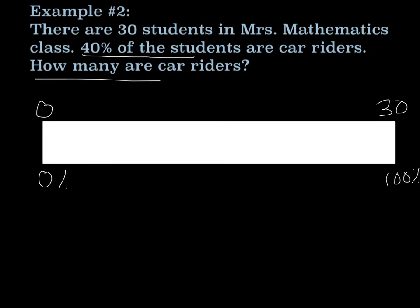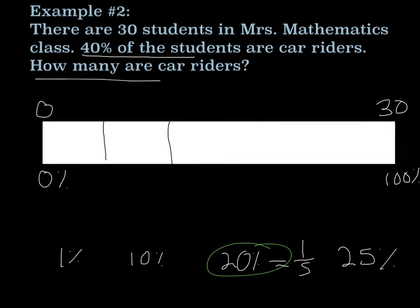So once again, we need to go back to those benchmarks: we have 1%, 10%, 20%, and 25% as our benchmarks. In this case, I would use the 20% because 20% plus 20% would give me the 40%. So if I remember, 20% is the same as one fifth of 100%. So I need to break this number line into five sections. So 1, 2, 3, 4, and 5.